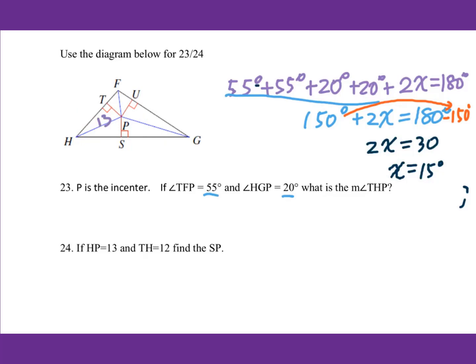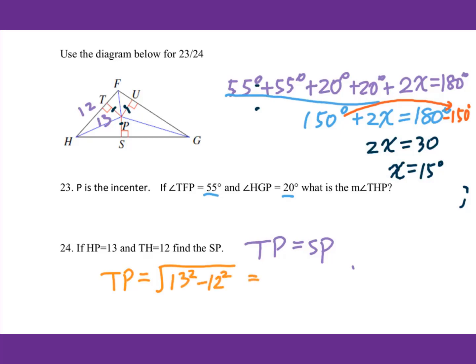If HP equals 13 and TH equals 12, find SP. Since P is the incenter, the three distances from P to each side are equal to each other. So as long as I can get TP, and since TP equals SP, I can find SP. For TP, we use the Pythagorean theorem: TP equals the square root of 13 squared minus 12 squared, which equals 5. Therefore, SP equals 5.